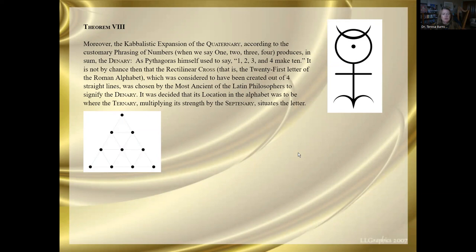Dee says, moreover, the cabalistic expansion of the quaternary, according to the customary phrasing of numbers, when we say one, two, three, four, produces in sum the denary. The denary is associated with the Pythagorean tetractus, discussed in earlier theorems, and I will say more about it today. When he says Kabbalah, he's going in denary, he's talking about the ten sephiroth.